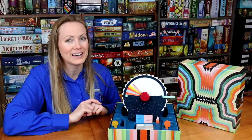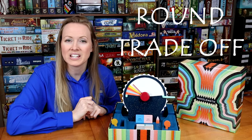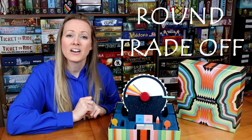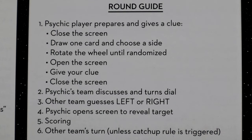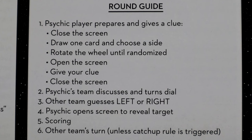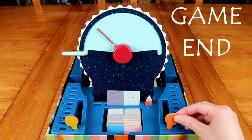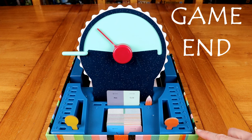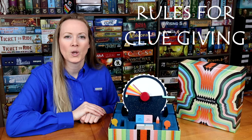Play will continue with teams taking turns, having a new clue giver give a clue to their own team while offering a chance for their opponents to jump in and maybe nab a point. Once a team reaches 10 points, the game ends immediately and they win.